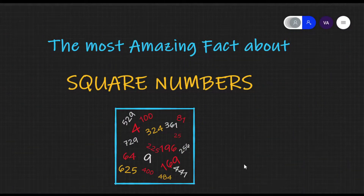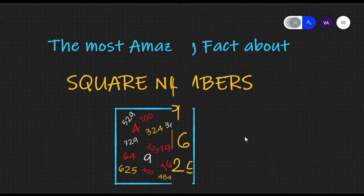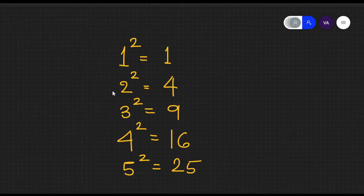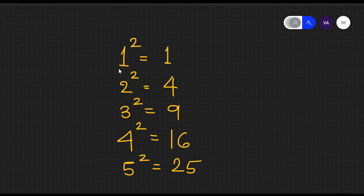Hello students, welcome back. Today we will see the most amazing fact about square numbers. We have written square numbers from 1 to 5: 1 squared is 1, 2 squared is 4, 3 squared is 9, 4 squared is 16, 5 squared is 25, and so on.